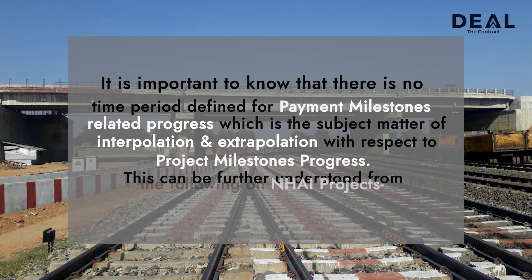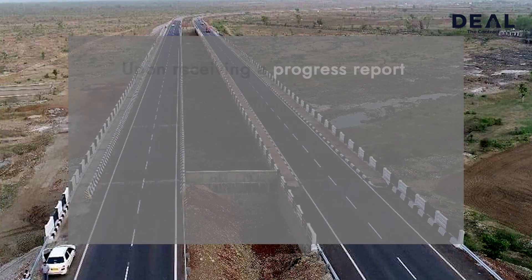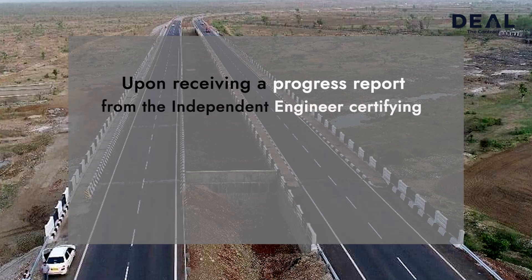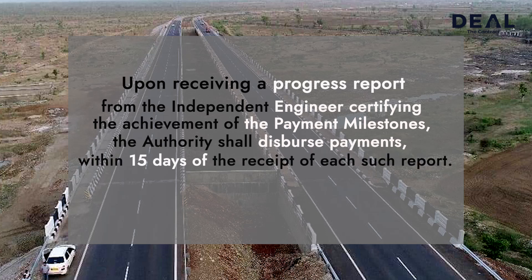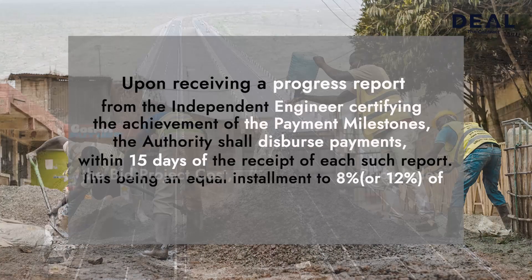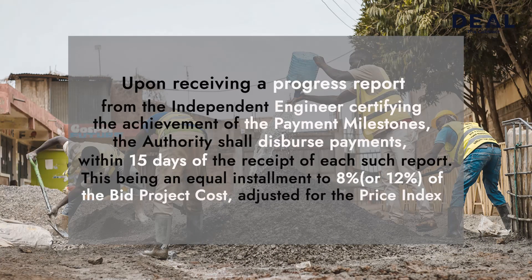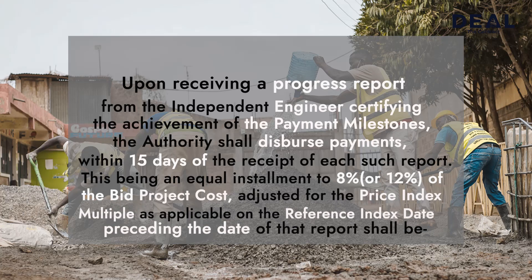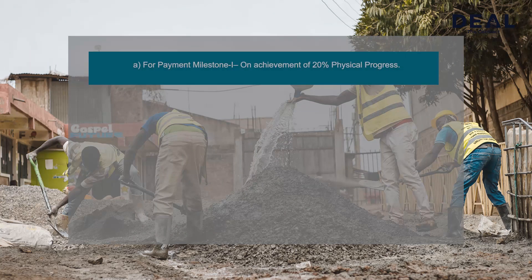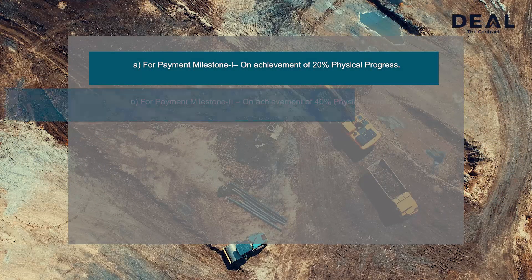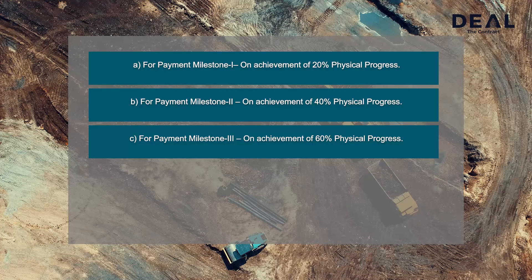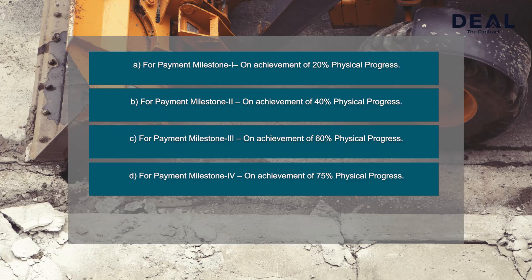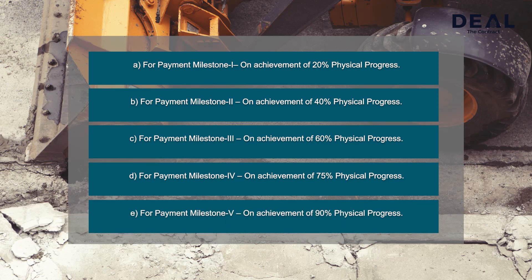On an NHI project, upon receiving a progress report from the independent engineer certifying achievement of the payment milestones, the authority shall disperse payments within 15 days of receipt of each report. This is an equal installment of 8% of the bid budget cost, adjusted for the price index multiple as applicable on the reference index date preceding the date of the report. Payment Milestone 1 is on achievement of 20% physical progress; Milestone 2 at 40%; Milestone 3 at 60%; Milestone 4 at 75%; and Milestone 5 at 90% of physical progress.